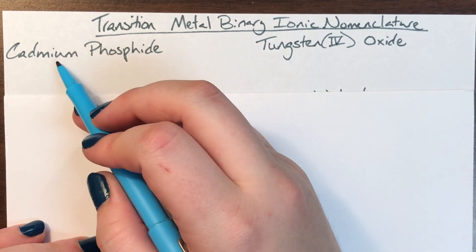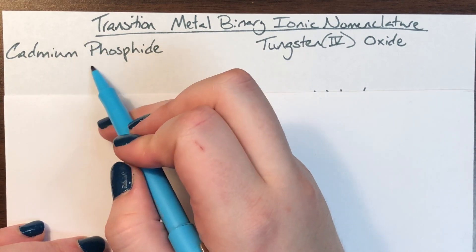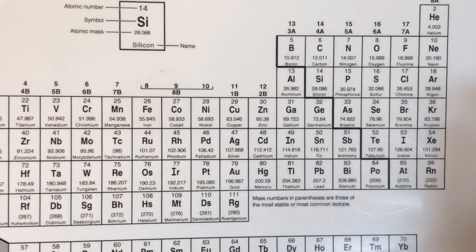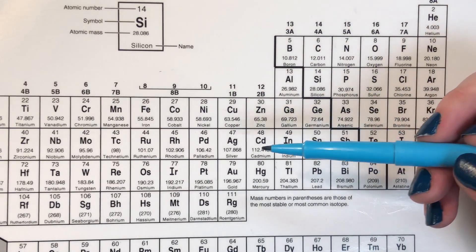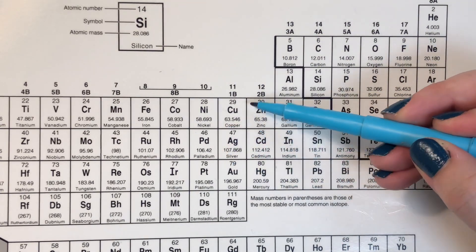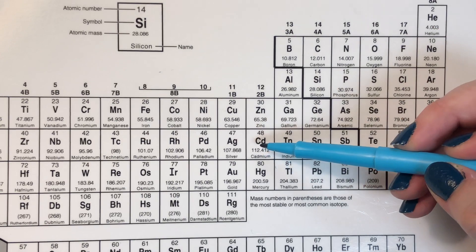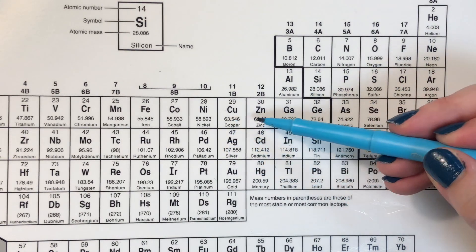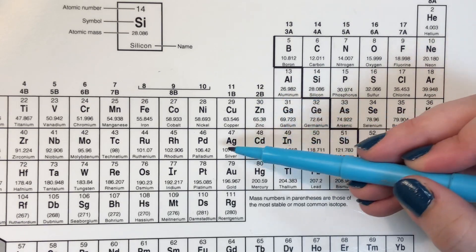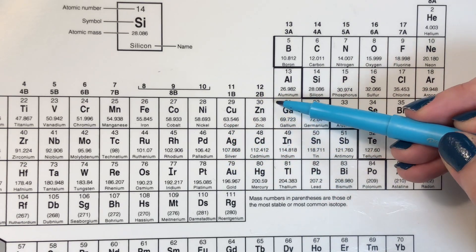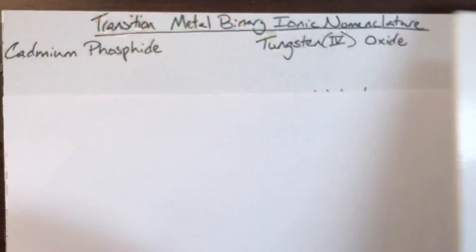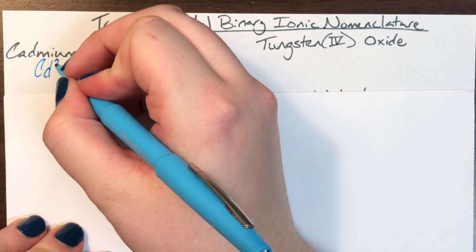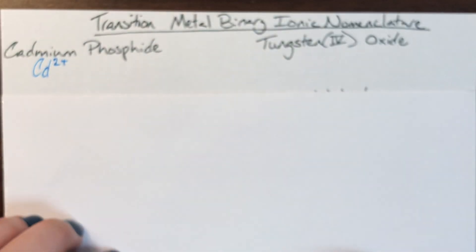Cadmium is not going to tell me its charge because it is part of Katzenegel. I need to look on the periodic table. It forms a stair-step line for cadmium, zinc, silver, and aluminum for what its charge is. Cadmium is in the second stair, which means cadmium is going to have a positive 2 charge. Cadmium's symbol is Cd, and I know it's going to be positive 2.